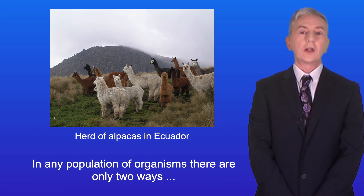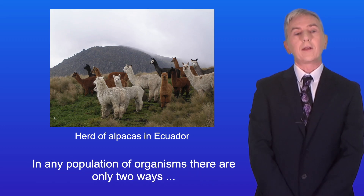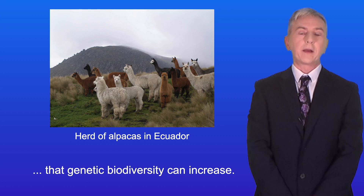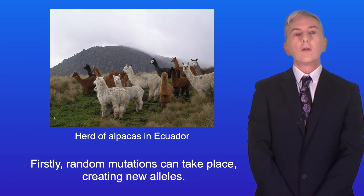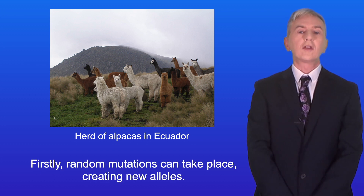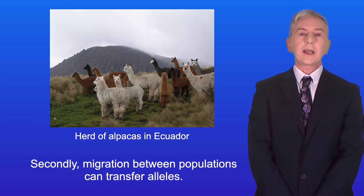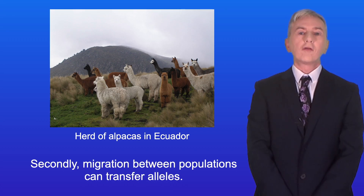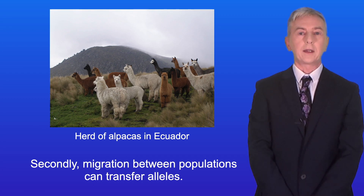In any population of organisms there are only two ways that genetic biodiversity can increase. Firstly, random mutations can take place creating new alleles. Secondly, migration between populations can transfer alleles.